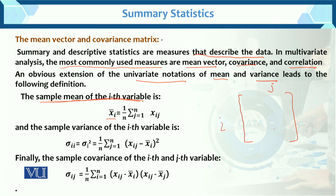The sample variance of the i-th variable is denoted sigma_{ii}, which we can also write as sigma_i squared, equal to variance. The sample variance of the i-th variable equals 1 over n, sum j from 1 to n of (x_{ij} minus x-bar_i) squared. In univariate, simple variance is sum of (x_i minus x-bar) squared divided by n.